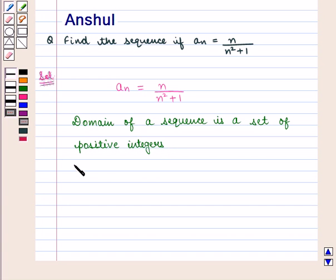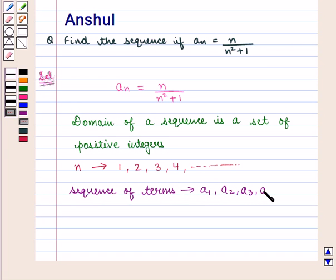It means n can take values such as 1, 2, 3, 4 and so on. Then, we have to find the sequence of terms given by a_1, a_2, a_3, a_4 and so on.